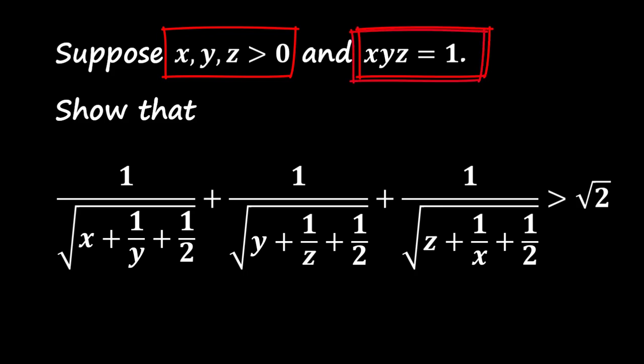We need to show that 1 divided by the square root of x plus 1 over y plus 1 half, plus 1 divided by the square root of y plus 1 over z plus 1 half, plus 1 divided by the square root of z plus 1 over x plus 1 half, is greater than the square root of 2.